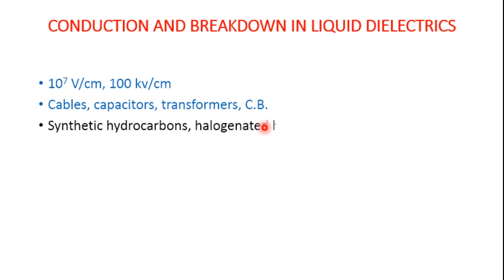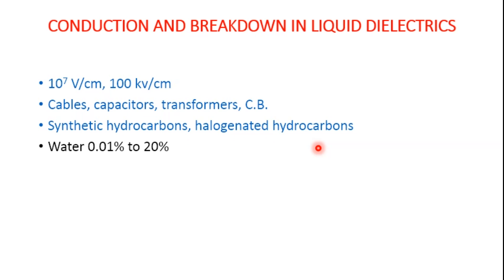Petroleum oils are the most commonly used liquid dielectric media. Synthetic hydrocarbons and halogenated hydrocarbons are also used for certain applications. Liquid dielectrics are normally a mixture of hydrocarbons and are weakly polarized. When used for electrical isolation they should be free from moisture content, products of oxidation, and other contamination. If there is a presence of only 0.01% water content in dry transformer oil, the dielectric strength will reduce by 20%.